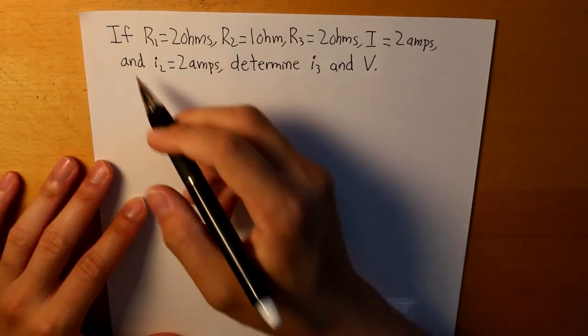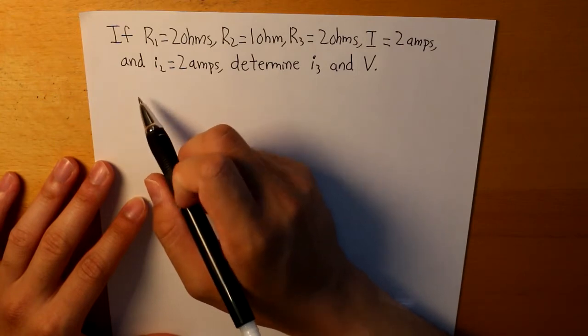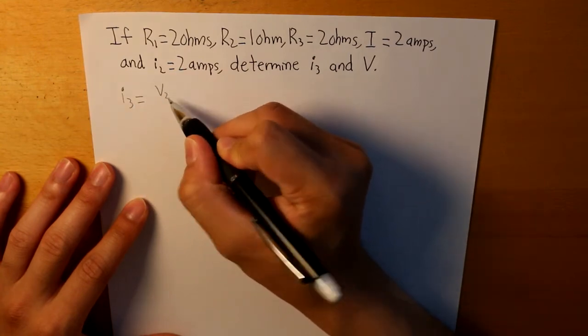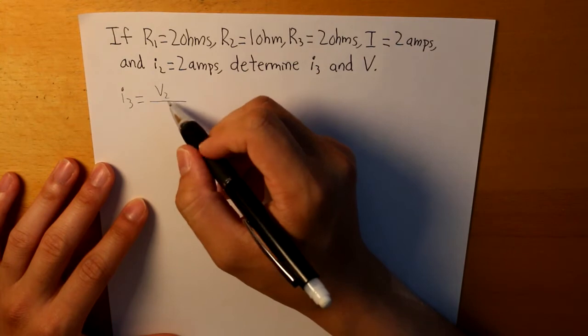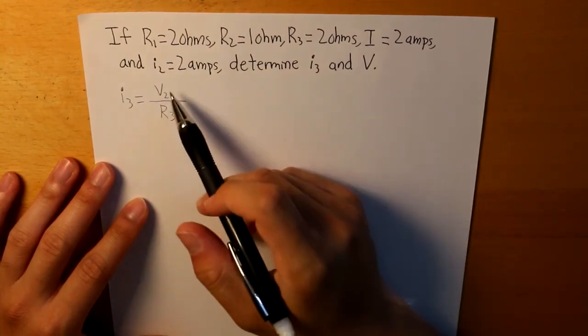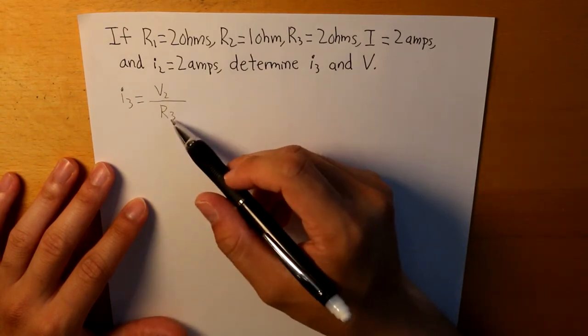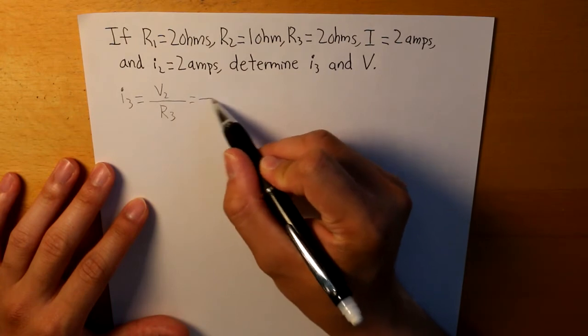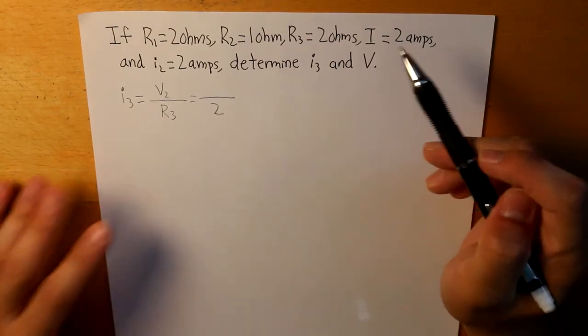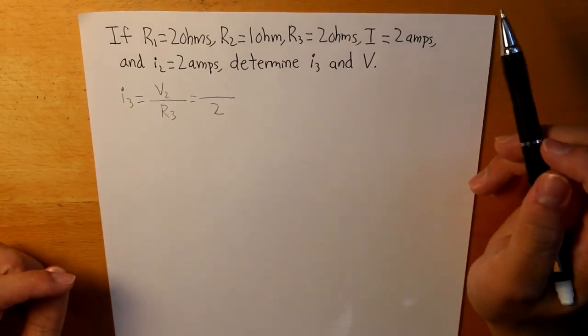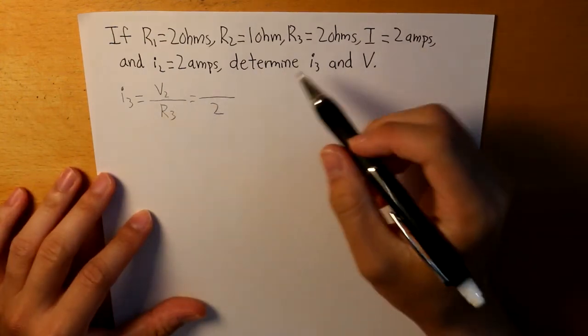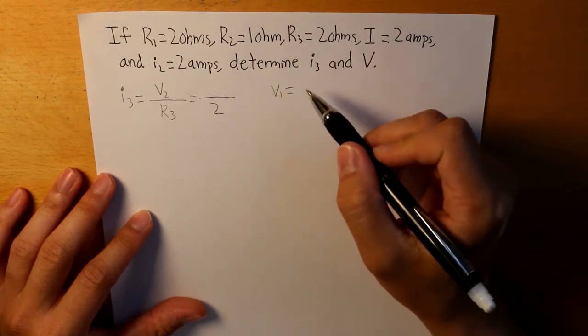And what we understand in our previous example is that I3 is equal to V2 divided by R3. So there we have V2 divided by R3. And we know what the value of R3 is, which is 2 ohms. But we do not know what V2 is. Well, understanding the process of how parallel resistors work, we do know that V2 is equal to V1 because they're parallel from one another.